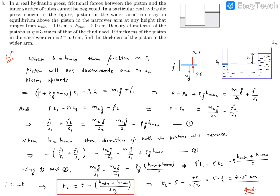Moreover, when H is at its maximum value, piston S2 will have a tendency to move downwards. This is because the pressure force on S2 is less dominating and the gravitational force dominates. So the frictional force on S2 acts upward when H is maximum.